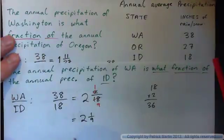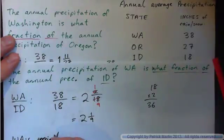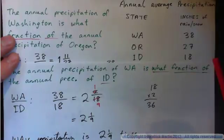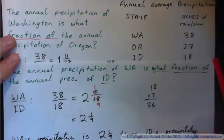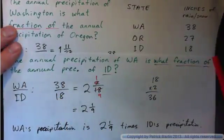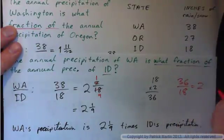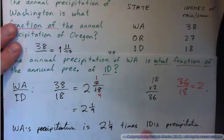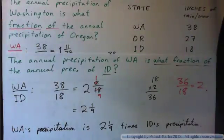What we found is Washington's precipitation is 2 and 1/9 times Idaho's precipitation. Washington's is a little more than twice as much. If Washington had 36 inches, it would have been 36 over 18, which equals exactly 2. But it's a little more than that — so Washington's precipitation is 2 and 1/9 times Idaho's, exactly. It's a little bit more than twice as much. Of course it's going to change from year to year, but on average it's a little bit more than twice as much rainfall and snowfall as Idaho.